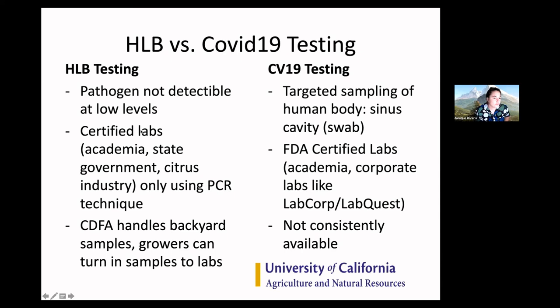Just like with COVID-19, there are certified labs for HLB, and it requires that molecular testing technique. For HLB, the government in California is very much involved — the California Department of Food and Agriculture is going around backyards in LA and Orange County, pulling leaves and sampling psyllids and testing them for HLB. Growers can also access labs associated with the citrus industry to get testing.